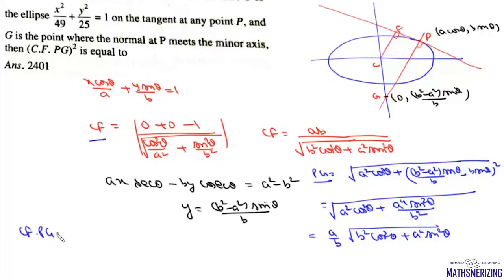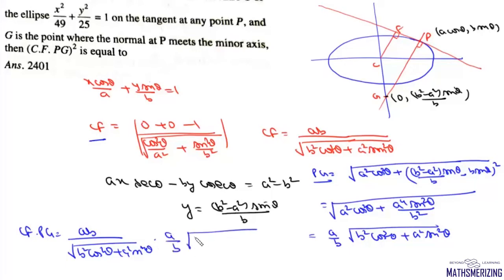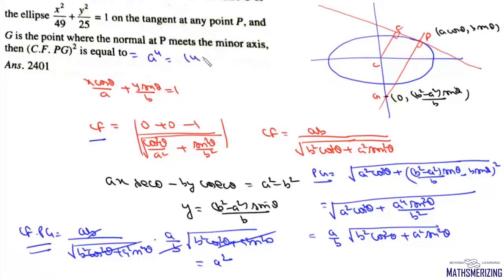Multiplying CF and PG: CF·PG = [ab / √(b²cos²θ + a²sin²θ)] × [(a/b)·√(b²cos²θ + a²sin²θ)] = a². So CF·PG = a². Squaring gives CF·PG² = a⁴. Since a = 7 here (implied from the answer), a⁴ = 2401, so the answer is 2401.